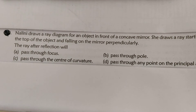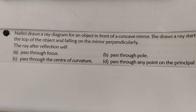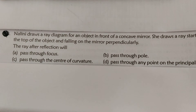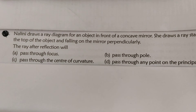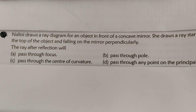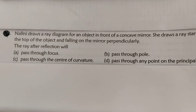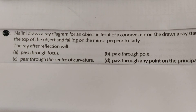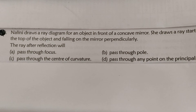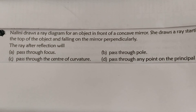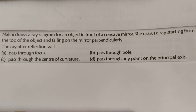When we take any point on the mirror and draw a line to the center of curvature, that line is the normal. So if the ray is incident perpendicularly, it will retrace back along the same path. This means the ray is reflected back along the same path, and it passes through the center of curvature. This is a case of normal incidence.